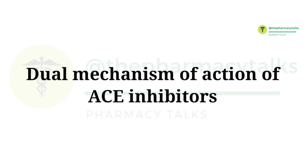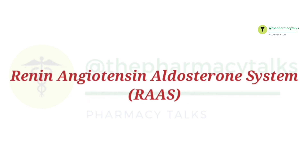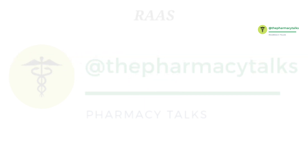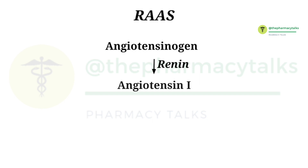Let's now discuss the dual mechanism of action of ACE inhibitors in detail. For this, let's understand the mechanism of the renin-angiotensin-aldosterone system under normal conditions. The liver creates and releases a protein called angiotensinogen, which is then broken down by renin, an enzyme produced in the kidney, to form angiotensin-1.